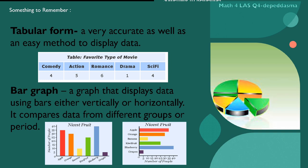Tabular form. A very accurate as well as an easy method to display data, as you can see from the example. Bar graph. A graph that displays data using bars either vertically or horizontally. It compares data from different groups or periods.